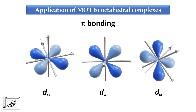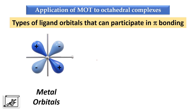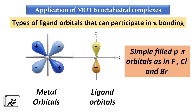For the formation of a pi bond with these t2g orbitals, we need specific orbitals from the ligand which can overlap with them. The first type are filled p-pi orbitals, as in fluoride, chloride and bromide. In these cases there are 2p, 3p or 4p orbitals occupied with electrons. These filled p-pi orbitals of the ligand are available to form a pi bond with the metal orbitals.